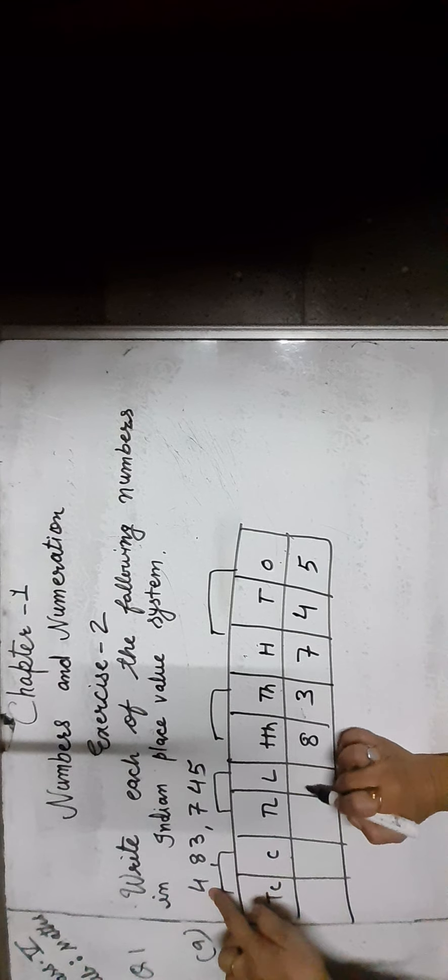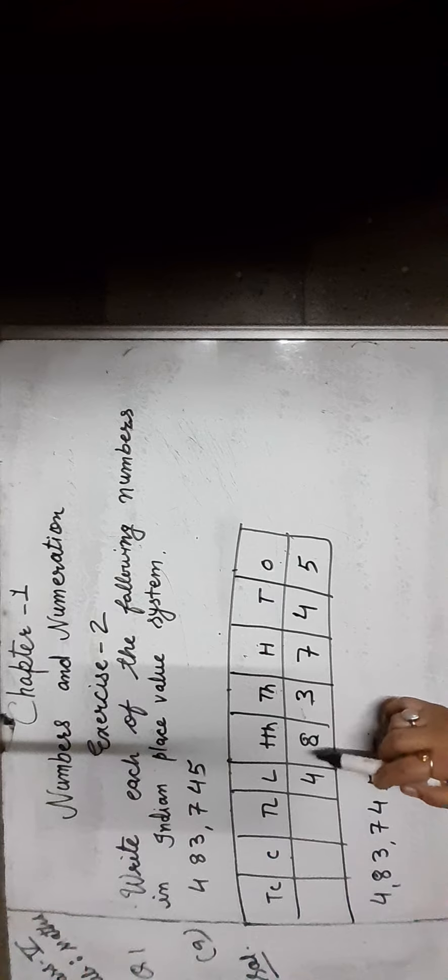Place the digits at the right positions: 5 ones, 4 tens, 7 hundreds, 3 thousands, 8 ten-thousands, and 4 lakhs. As you can see, 4 is in the lakh place so we call it 4 lakh, and 8 and 3 are in the thousands place so we call it 83 thousand. The number is 4,83,745.